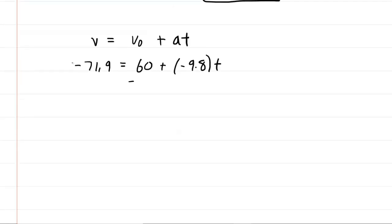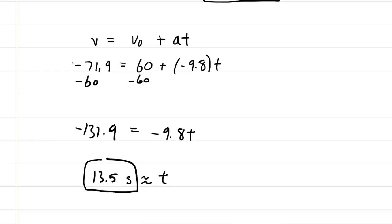We will subtract 60 from both sides. When we do that, on the left hand side, we're going to get negative 131.9 roughly. This is equal to negative 9.8 t. And then divide both sides by negative 9.8. And you're going to get about 13.5 seconds. And that's the time that it takes to reach the ground. And that is the correct answer for part b.